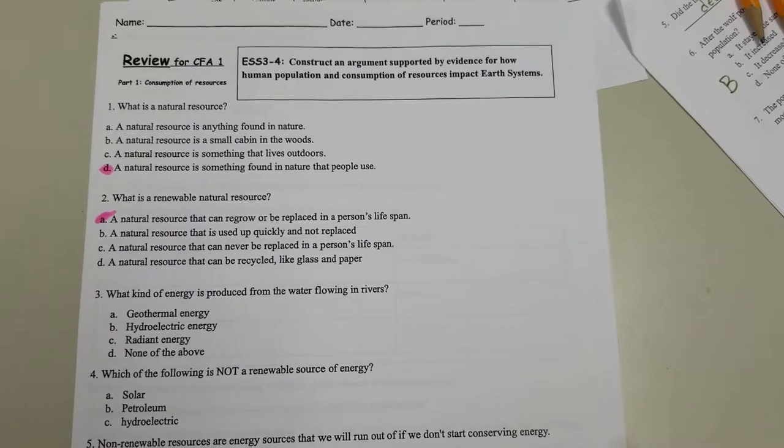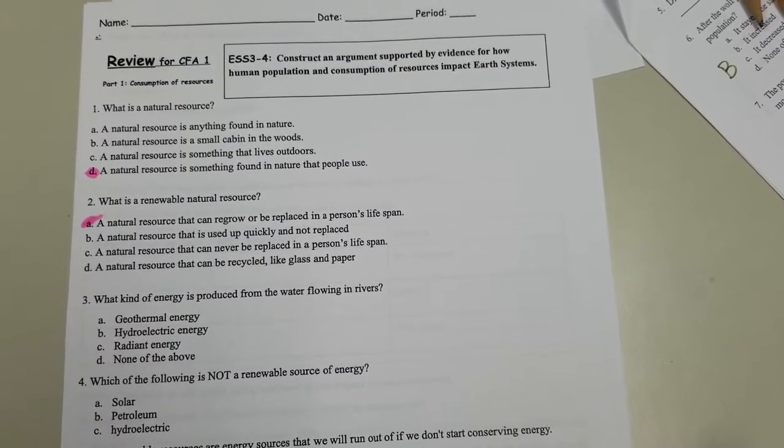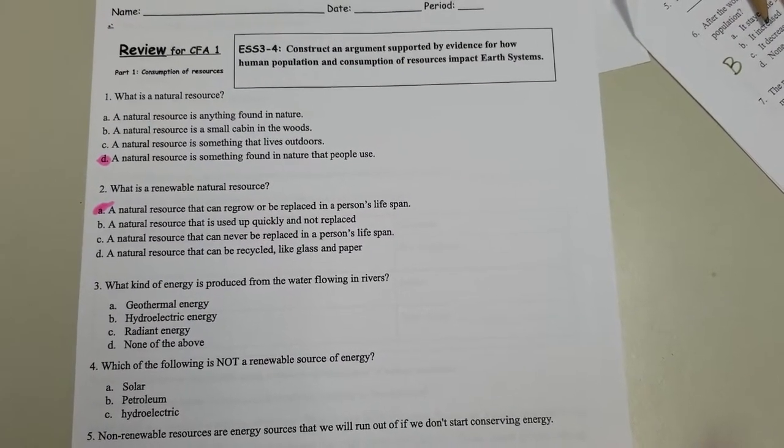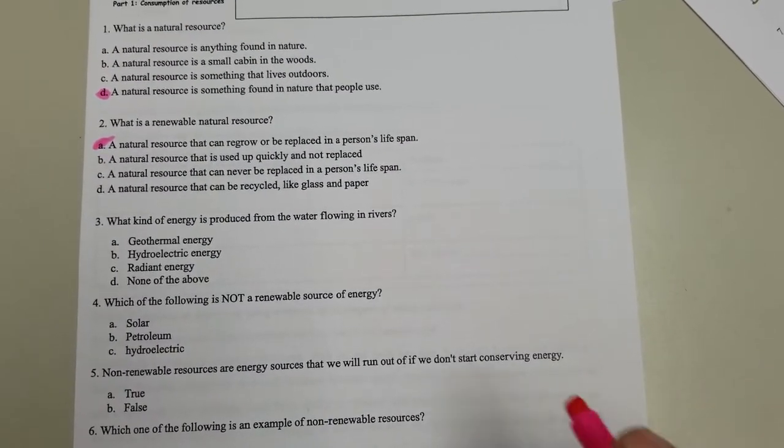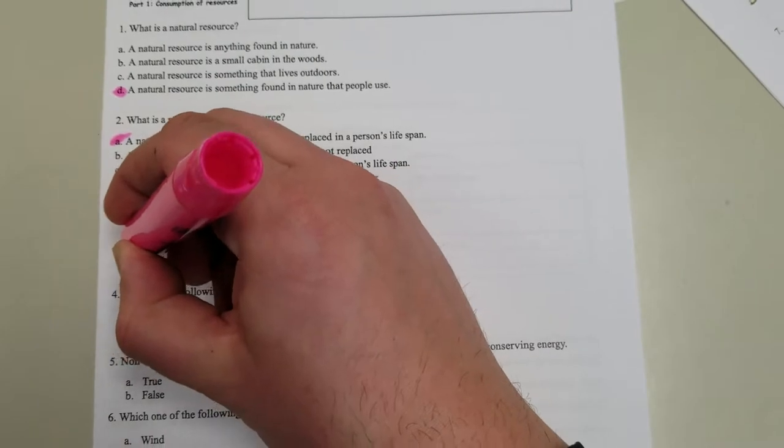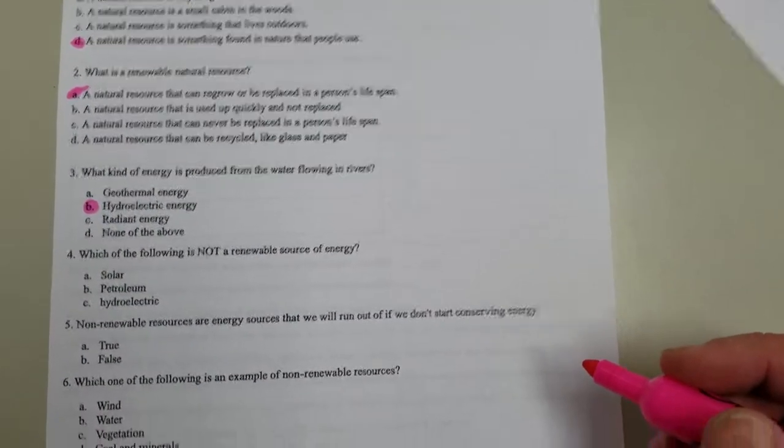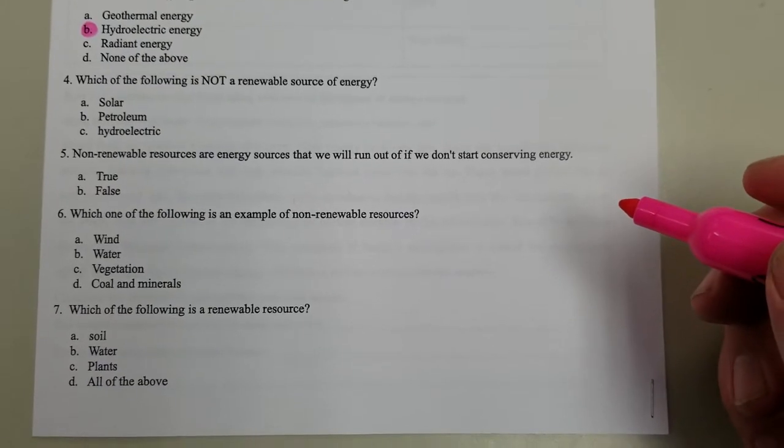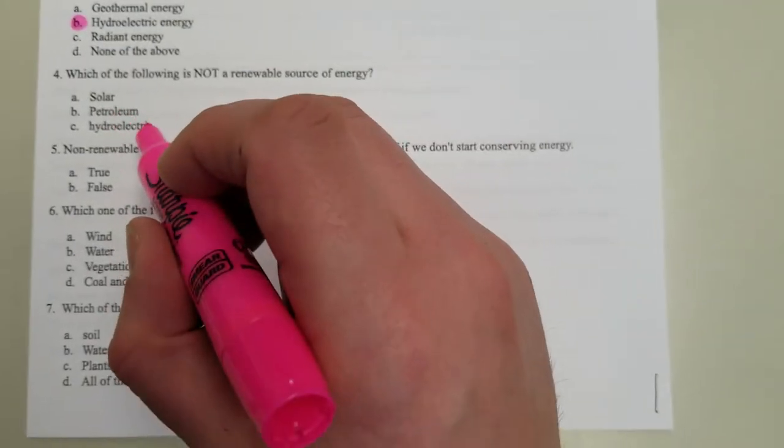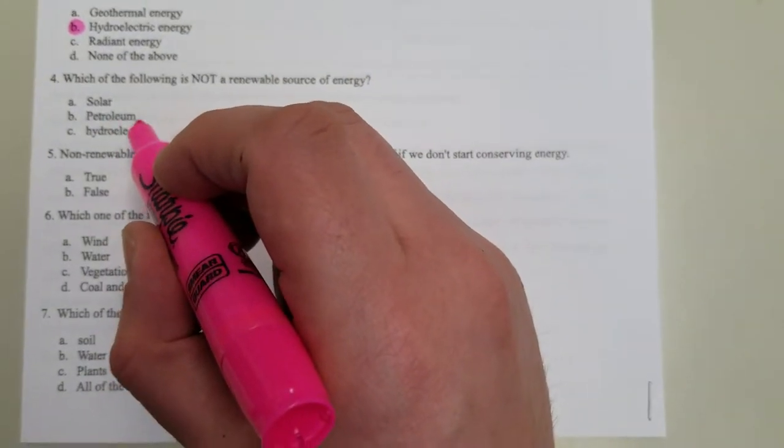What kind of energy is produced from water flowing in rivers? We talked about this briefly. It's gonna be hydroelectric. Hydro means water. Which of the following is not a renewable source of energy: solar, petroleum, or hydroelectric? We just said hydroelectric is water, that's renewable. Solar is the sun, it's renewable. It's gonna be petroleum.